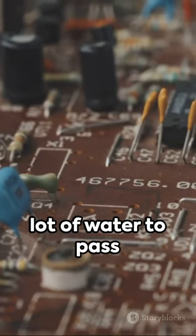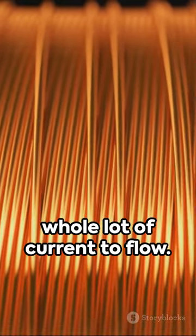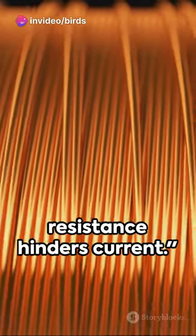A wide pipe allows a lot of water to pass through, and similarly, a low resistance lets a whole lot of current to flow. Conversely, a narrow pipe limits water flow, just like how a high resistance hinders current.